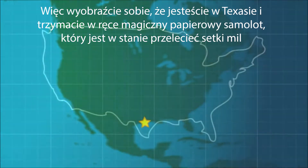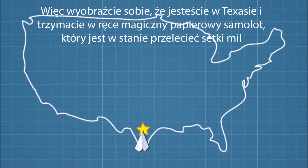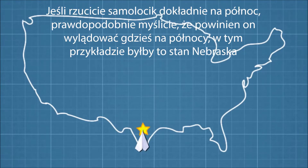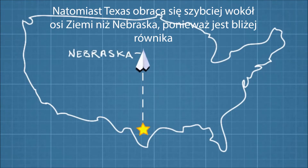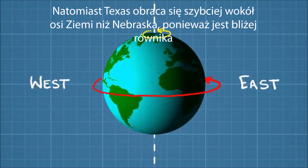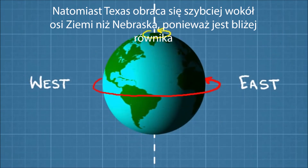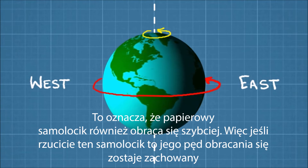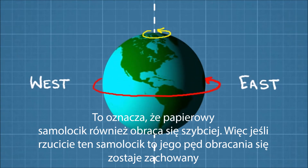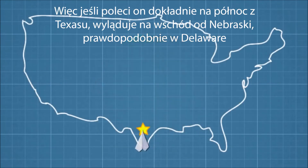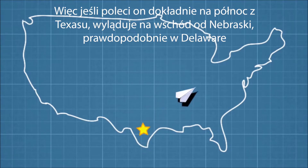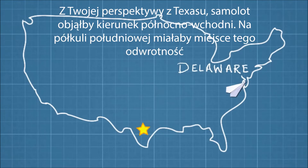So imagine you were standing in Texas and had a magic paper airplane that could travel hundreds of miles. If you threw your airplane directly northward, you might think it would land straight north, maybe somewhere in Nebraska. But Texas is actually spinning around Earth's axis faster than Nebraska is, because it's closer to the equator. That means the paper airplane is spinning faster as well, and when you throw it, that spinning momentum is conserved. So if you threw your paper airplane in a straight line toward the north, it would land somewhere to the right of Nebraska, maybe in Delaware.